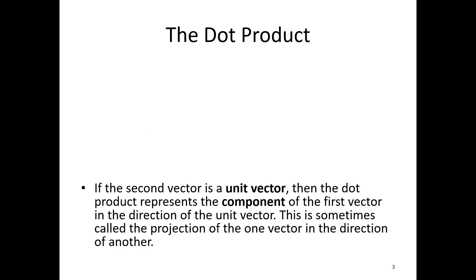So if the second vector in that a dot b is a unit vector, that's when we have something useful. Then the dot product represents the component of the first vector in the direction of the unit vector. So this is sometimes called a projection of one vector into the direction of another.